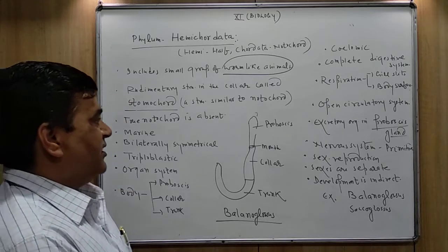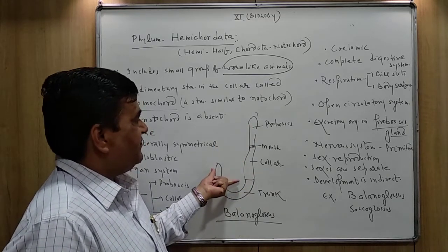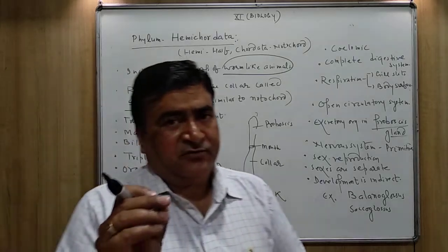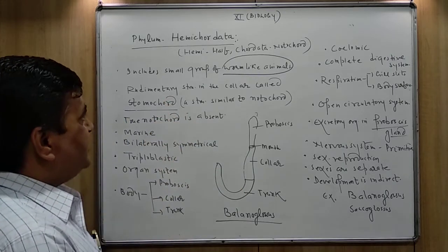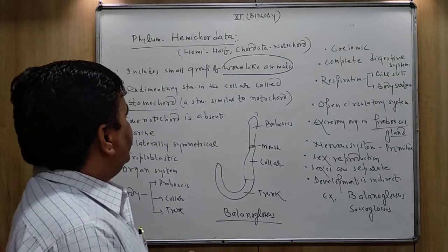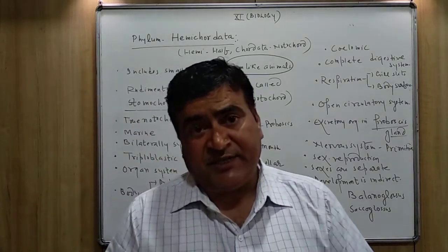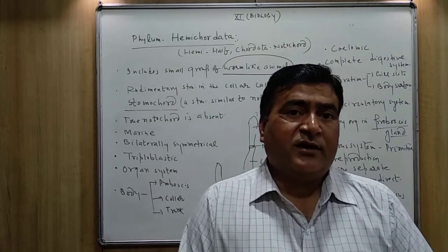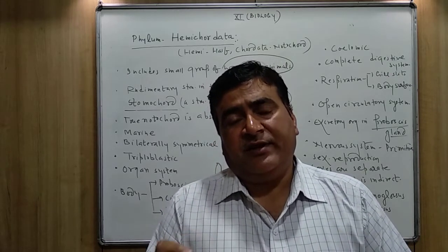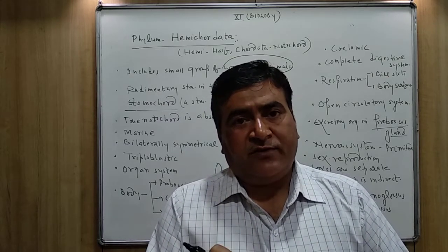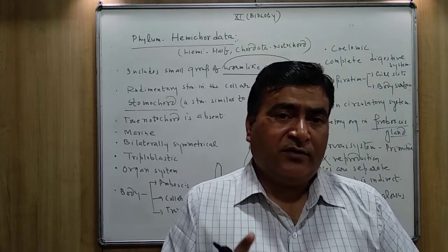The body is divided into three parts: proboscis, collar, and trunk. The notochord-like structure called stomochord is found in the collar region. So the rudimentary structure is found in the collar and is called stomochord. It means the true notochord is absent. The developed notochord is found only in the case of all the chordates, but here the notochord-like structure found is called stomochord, and it is found in the collar portion of the body.